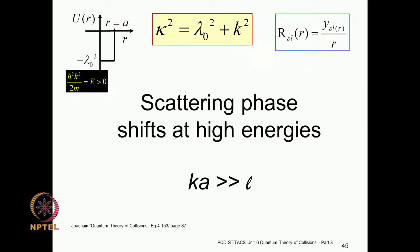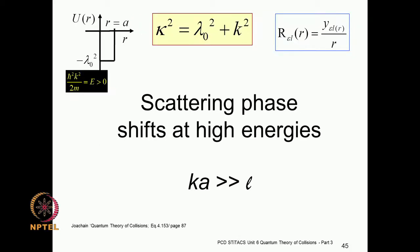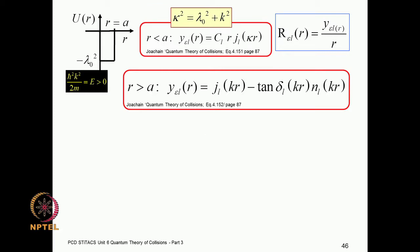We now consider the high-energy behavior. 'High energy' here means high with respect to the orbital angular momentum, because ka and l come together. So if ka is much larger than l, you are in the high-energy domain for this context. We set up the relationships for the Schrödinger equation in the inner region.